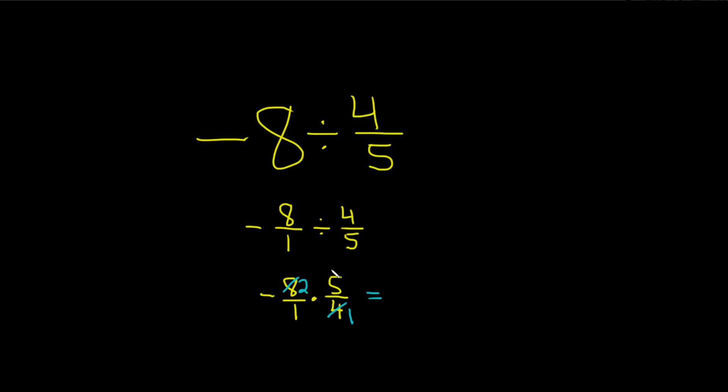And now we can multiply straight across. 2 times 5 is equal to 10 over, and then 1 times 1 is equal to 1. And then one of them is negative, so the answer is negative. If they're both negative, it's positive.